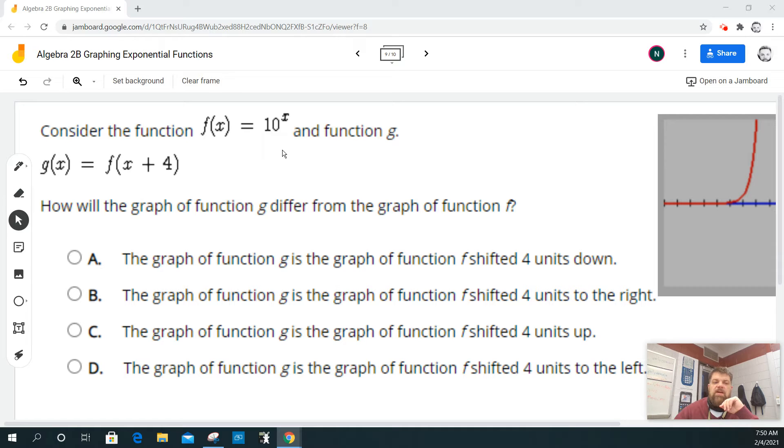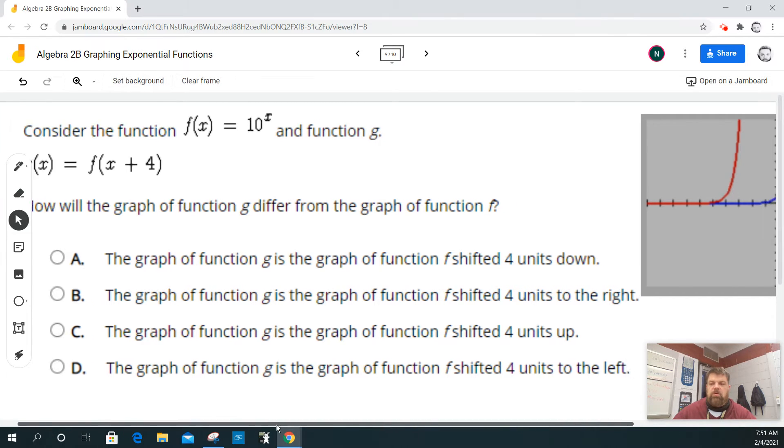So how will the graph differ for g as opposed to f, the original function that we're transforming?